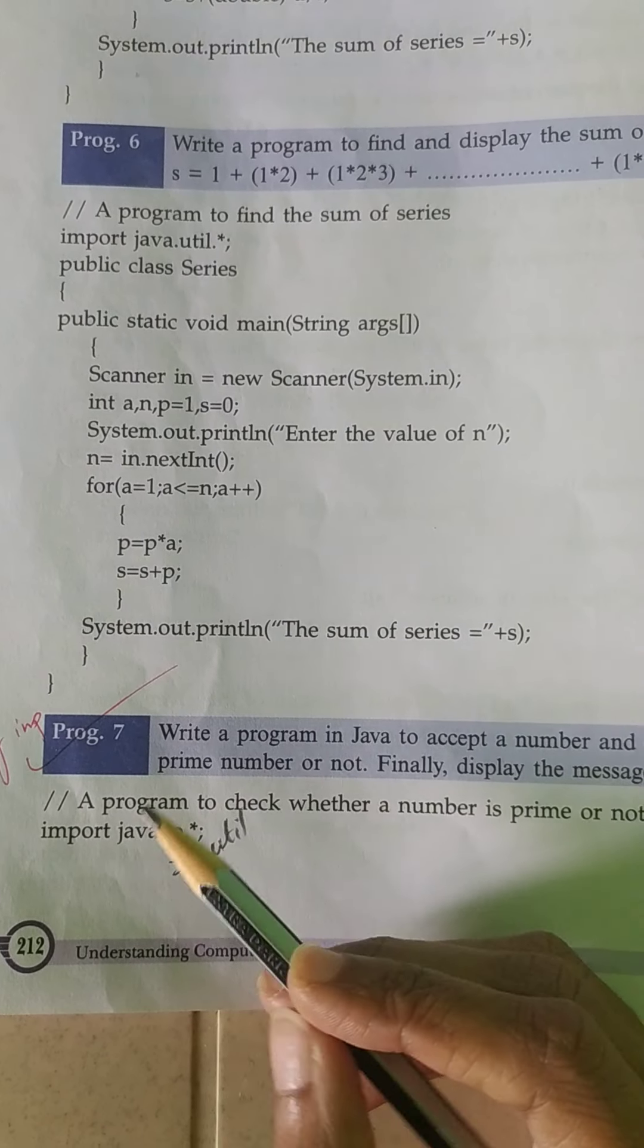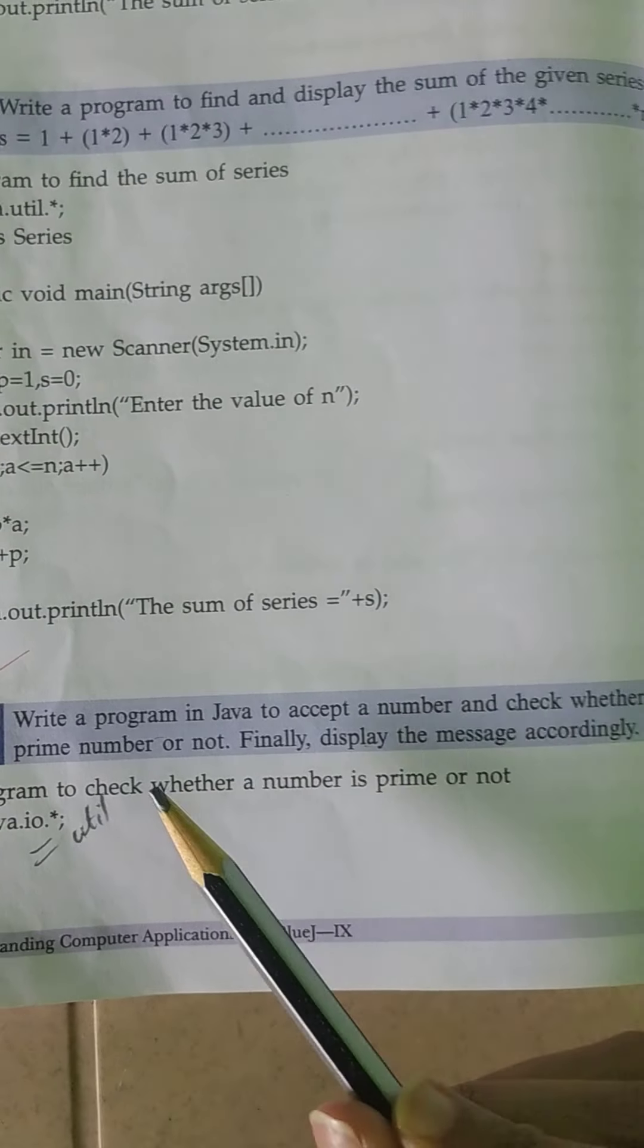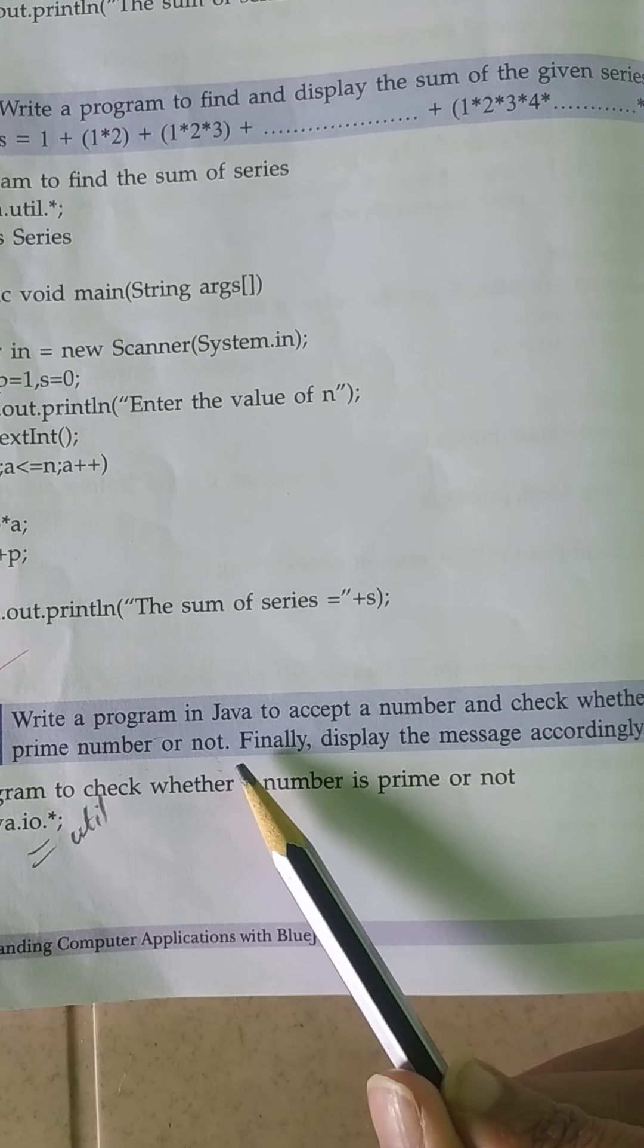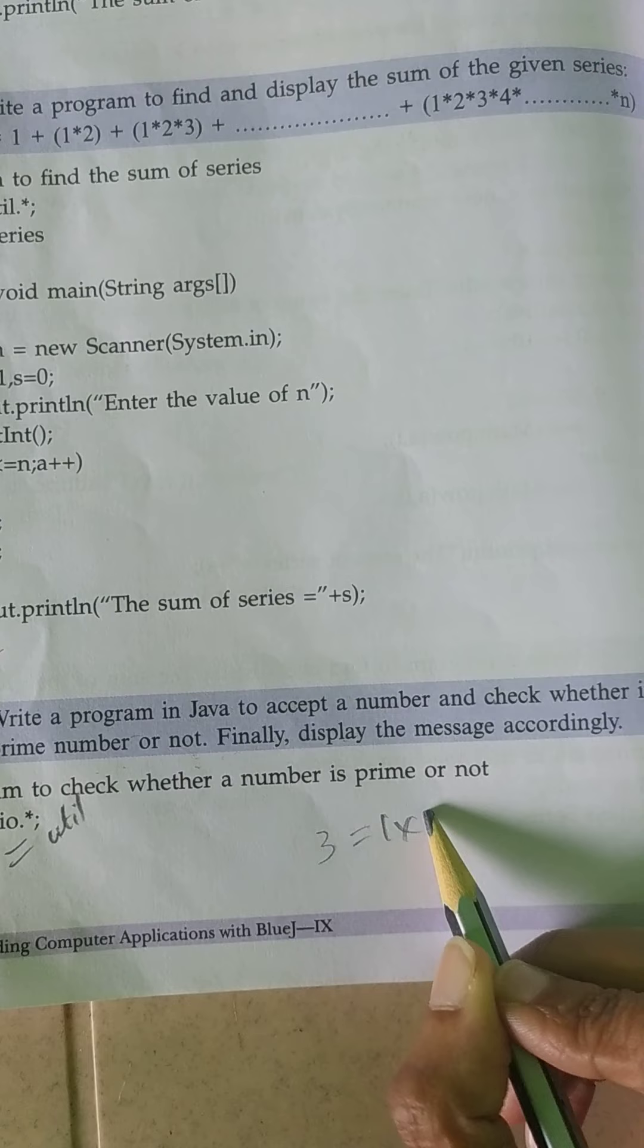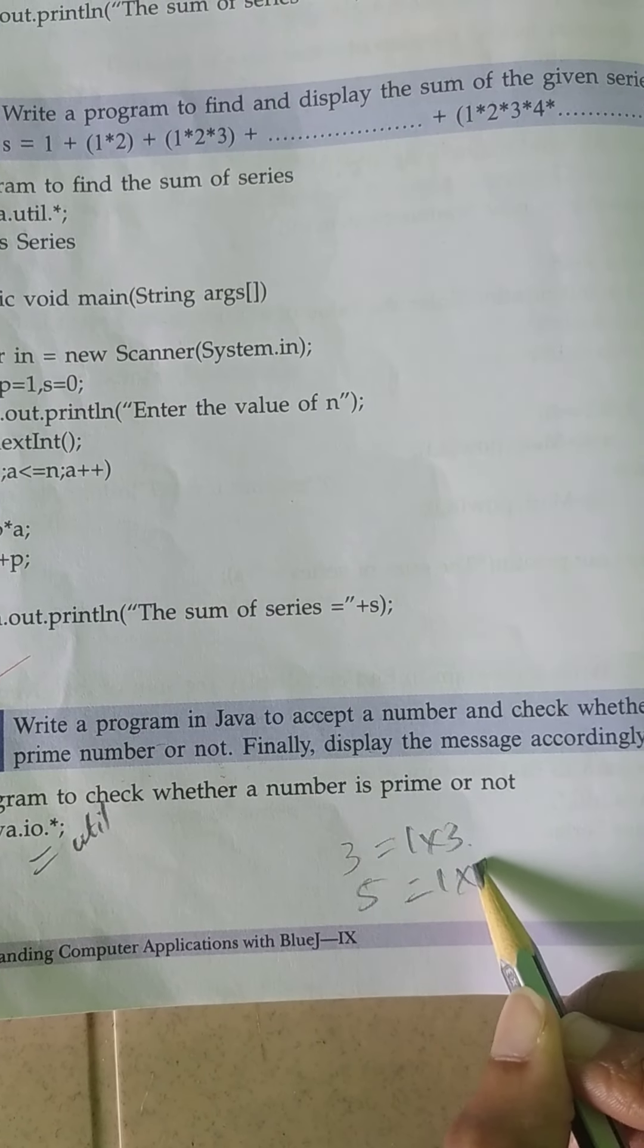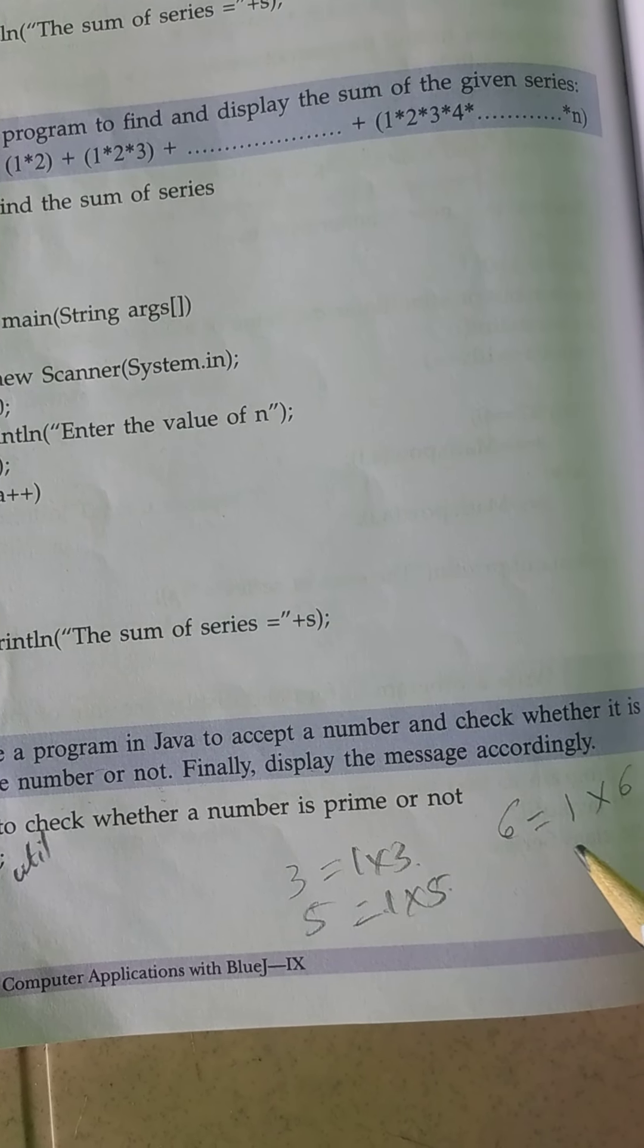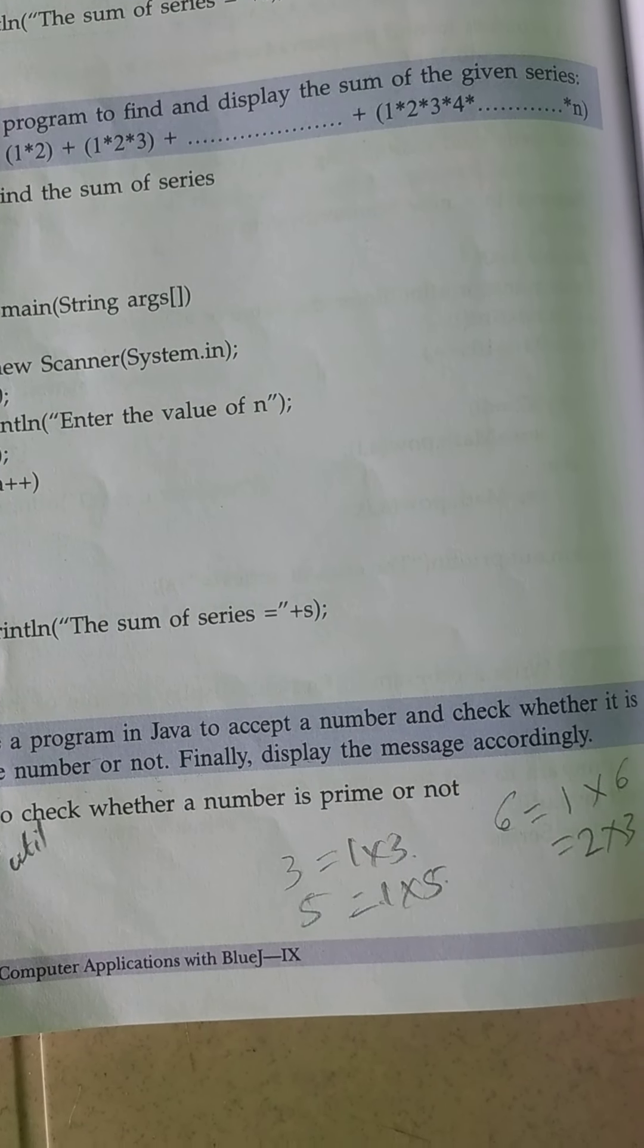In this program, write a program in Java to accept a number and check whether it is a prime number or not. Prime number means it has only two factors. If I'm taking three, that's one times three - only two factors. If I'm taking five, one times five - only two factors. But if I'm taking six, I'll get so many factors. So this is not a prime. These numbers are prime.